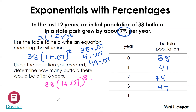Did y'all get 65? Make sure you got the same thing. Does everybody see why we're rounding? Again, it's because you can't have half a buffalo. So in the little box, write the equation: 38 times (1 plus 0.07) raised to the t power. You can simplify what's in the parentheses to say 1.07, but for right now we can leave it like that.